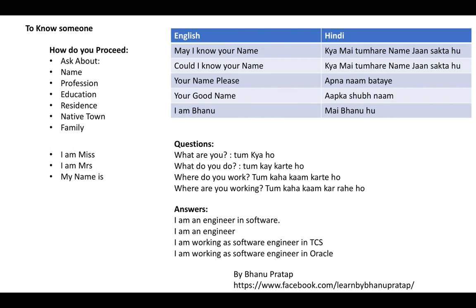Once you come to know about that person's name, you should ask about their profession — what he does. So you can ask: 'What are you?' — tum kya ho — or 'What do you do?' — tum kya karte ho — or 'Where do you work?' — tum kahan kaam karte ho — or 'Where are you working?' — tum kahan kaam kar rahe ho. If you are able to ask any one of these questions, that is good enough.